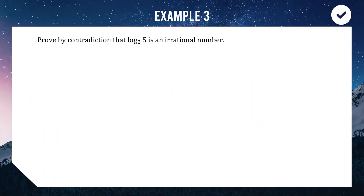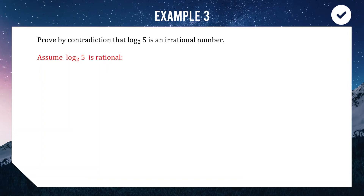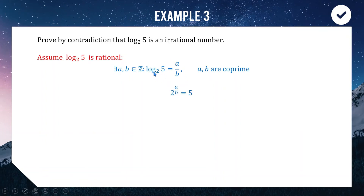The two main types of questions using contradiction proofs are square roots, as we just saw, and logarithms. We're going to prove that log₂(5) is irrational. We start by declaring log₂(5) is rational and try to show that makes no sense. So we write log₂(5) = a/b, a fraction of two co-prime integers. We then translate this into an exponential equation: 2^(a/b) = 5. Raising both sides to the power of b, the indices multiply to give 2^a = 5^b.